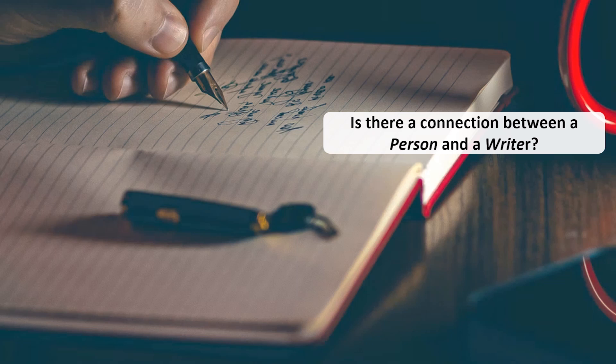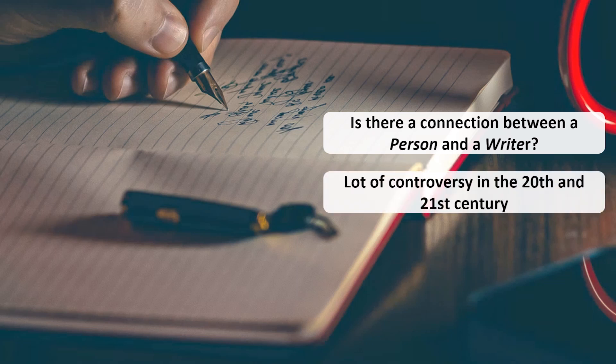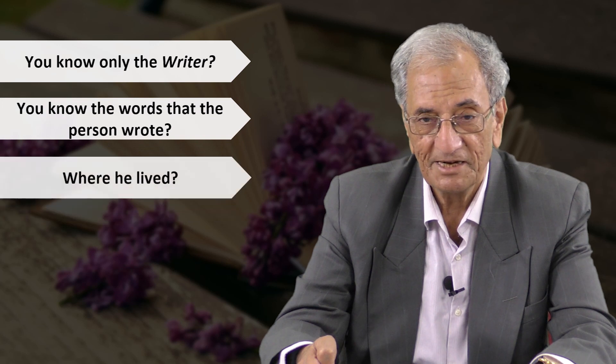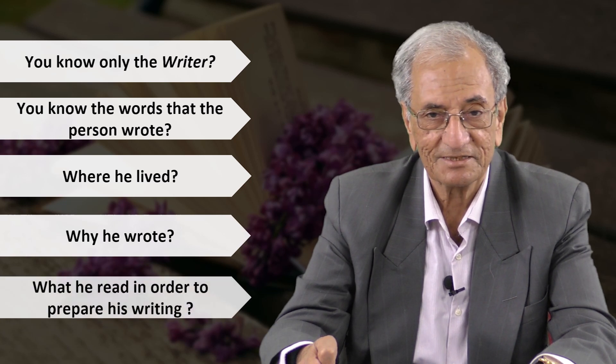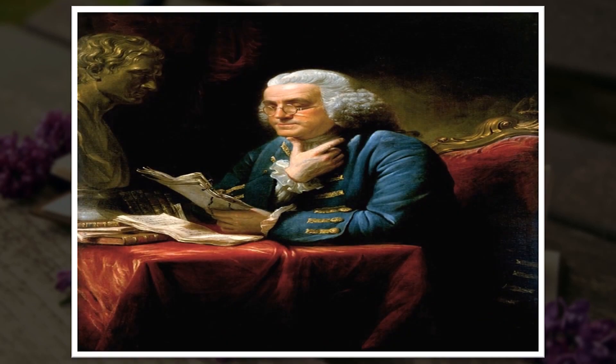There is a lot of controversy in the 20th and 21st centuries: some say only the writer's words matter, not the person — where he lived, why he wrote, what his family was like. That is the new approach. But one may also believe that knowing the writer as a person helps you understand the problems presented in his writing. I think it is helpful to know the writer as a person if the information is available, and we have that personal information for Henry Fielding.